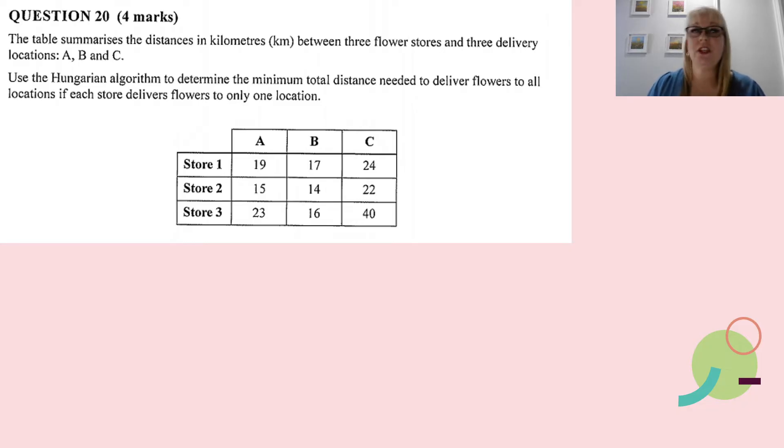That was our first question on the paper. Now we're into the short answer questions. This one's worth four marks. The table summarizes the distances in kilometers between three flower stores and three delivery locations A, B, and C. We now have to use the Hungarian algorithm to determine the minimum total distance needed to deliver flowers to all the locations if each store is only going to be delivering flowers to one location.